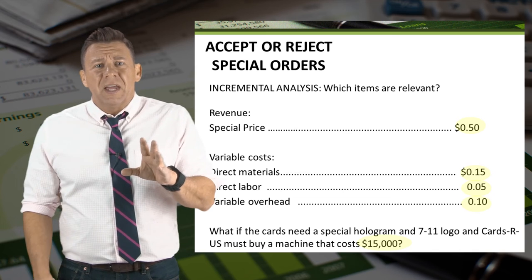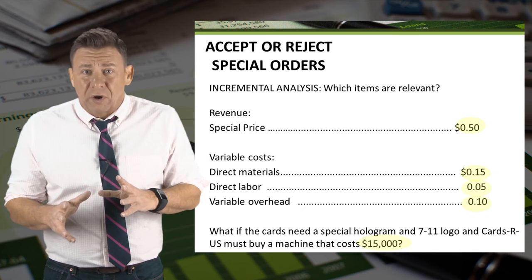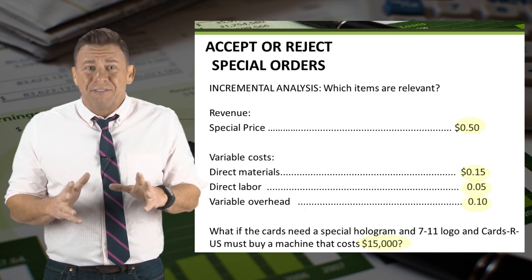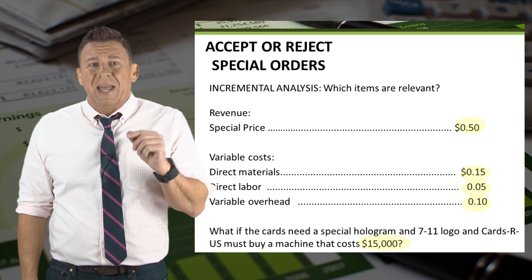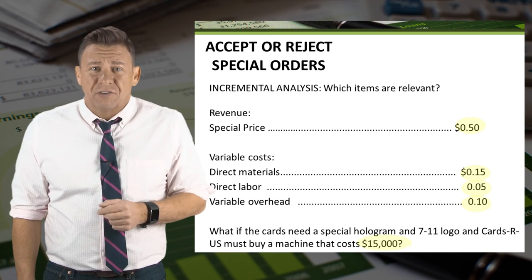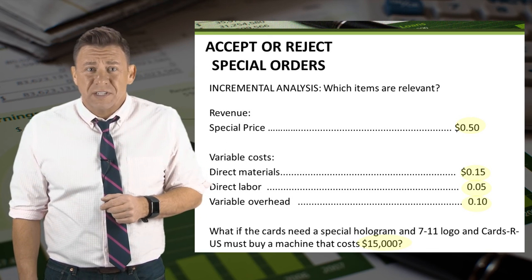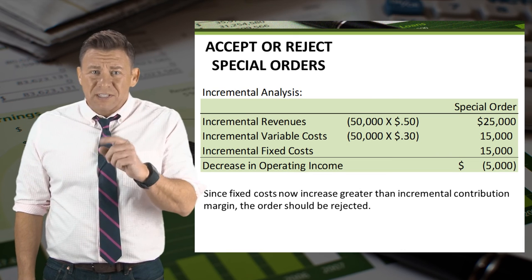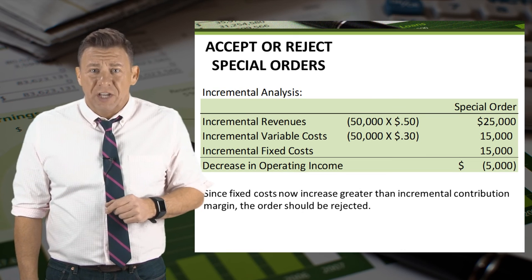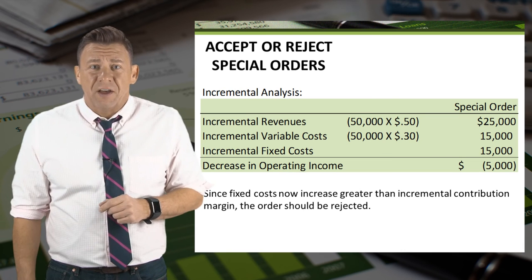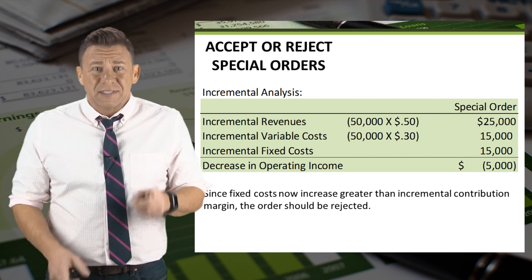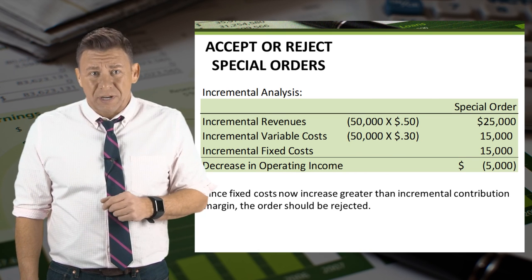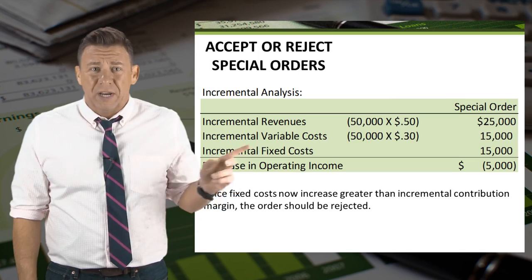What if the cards need a special hologram and a 7-Eleven logo, and Cards R Us must buy a machine that costs $15,000 to do this? Now fixed costs have changed, increasing by $15,000. Management should reject the order because this special order would cause a decrease in operating income.